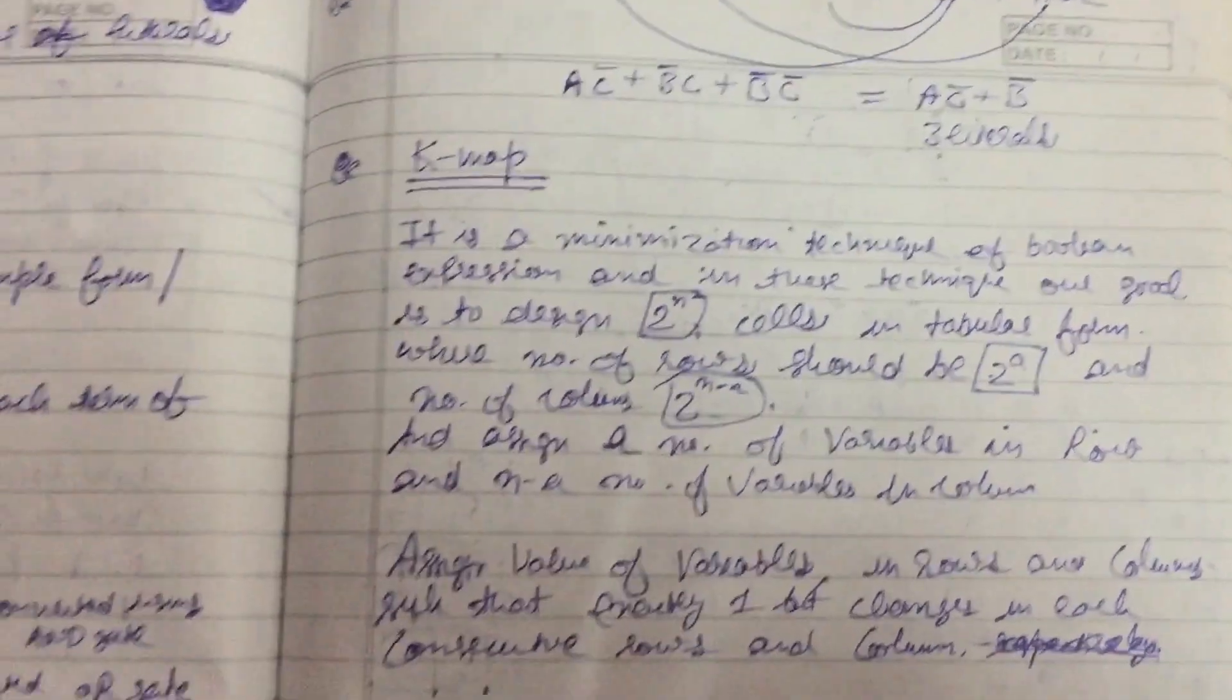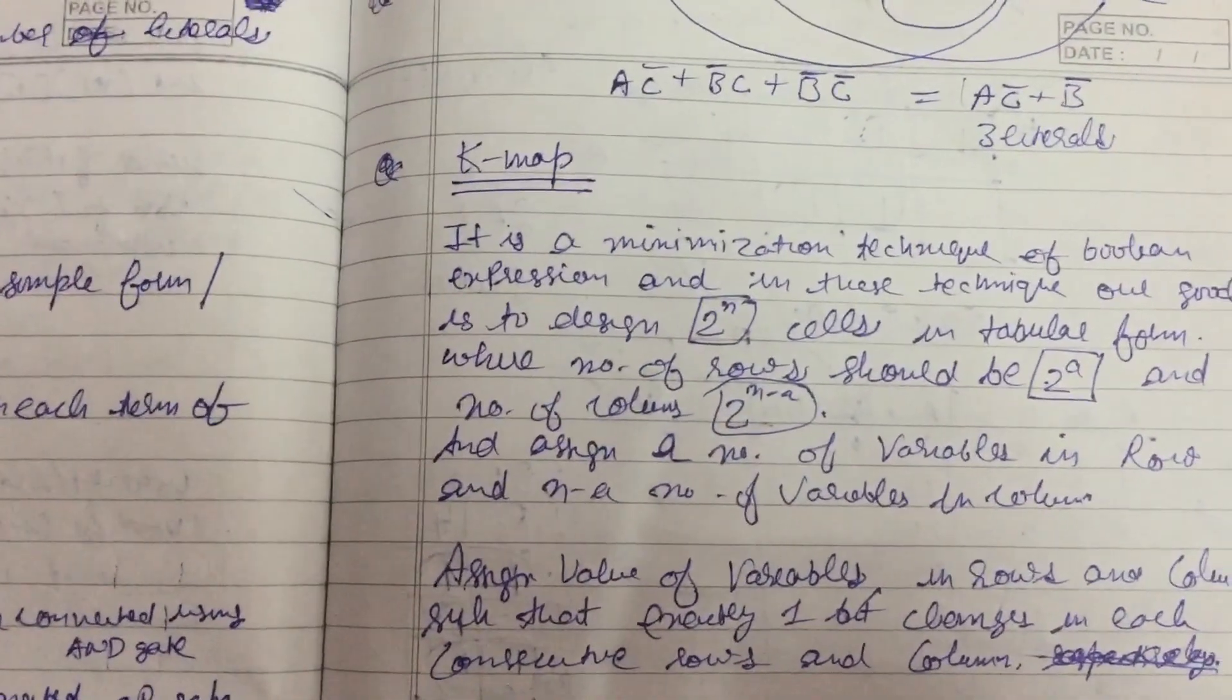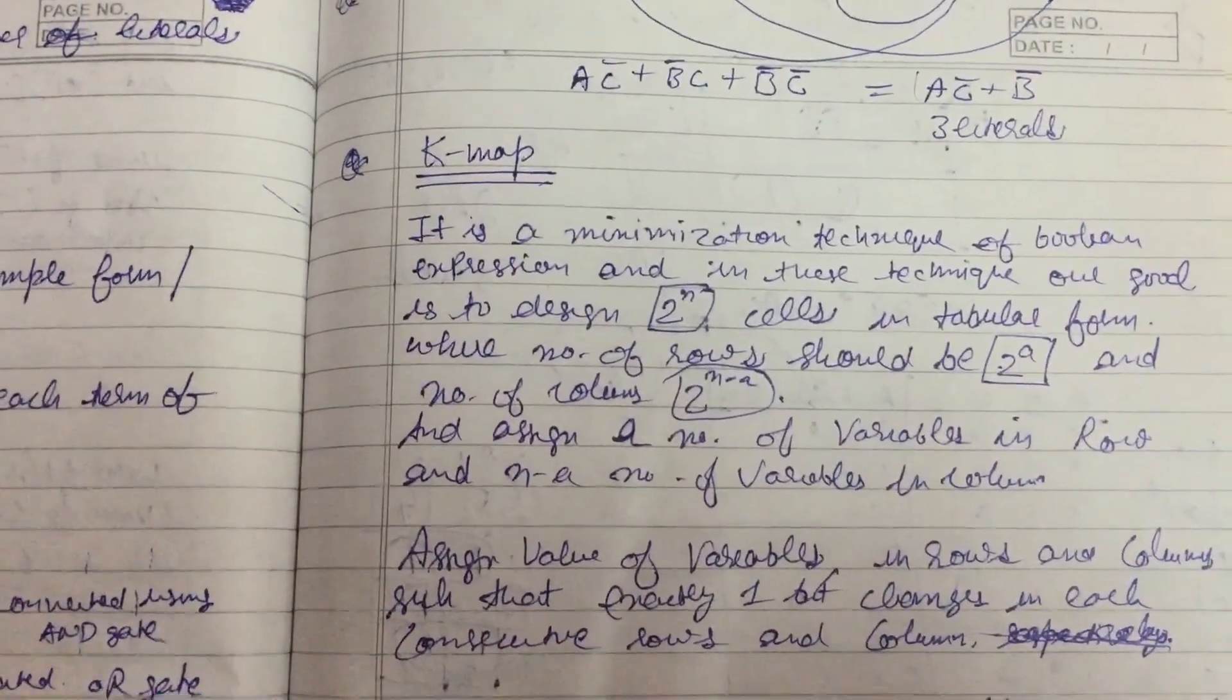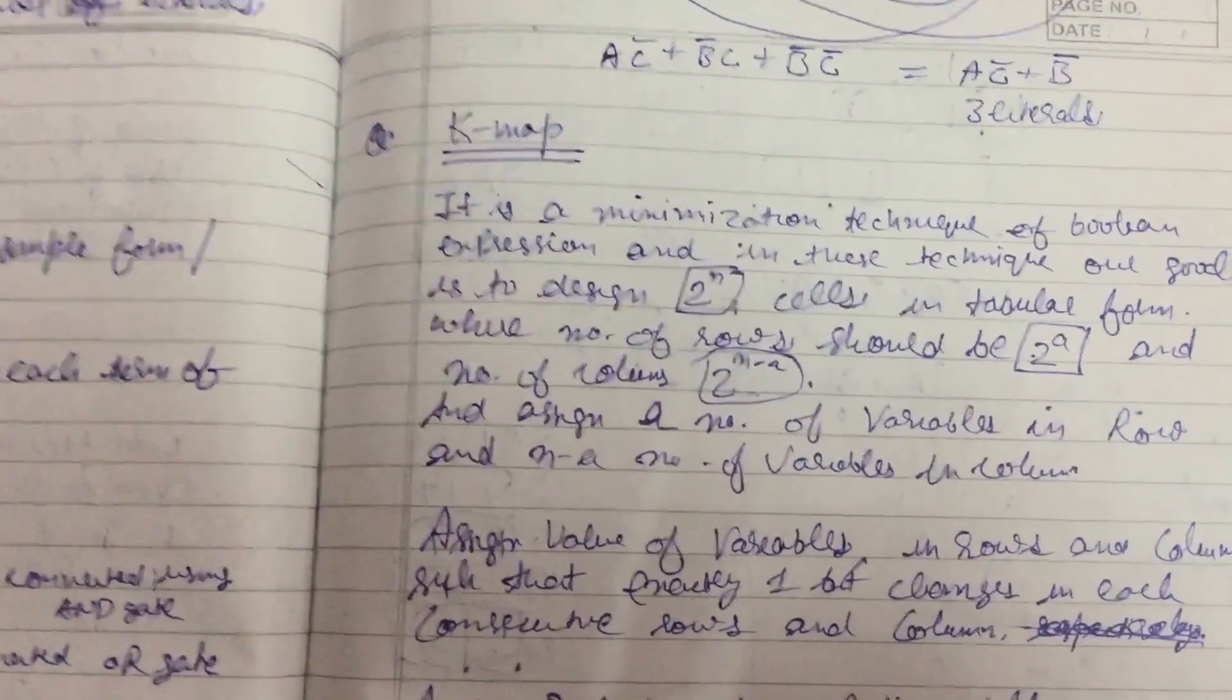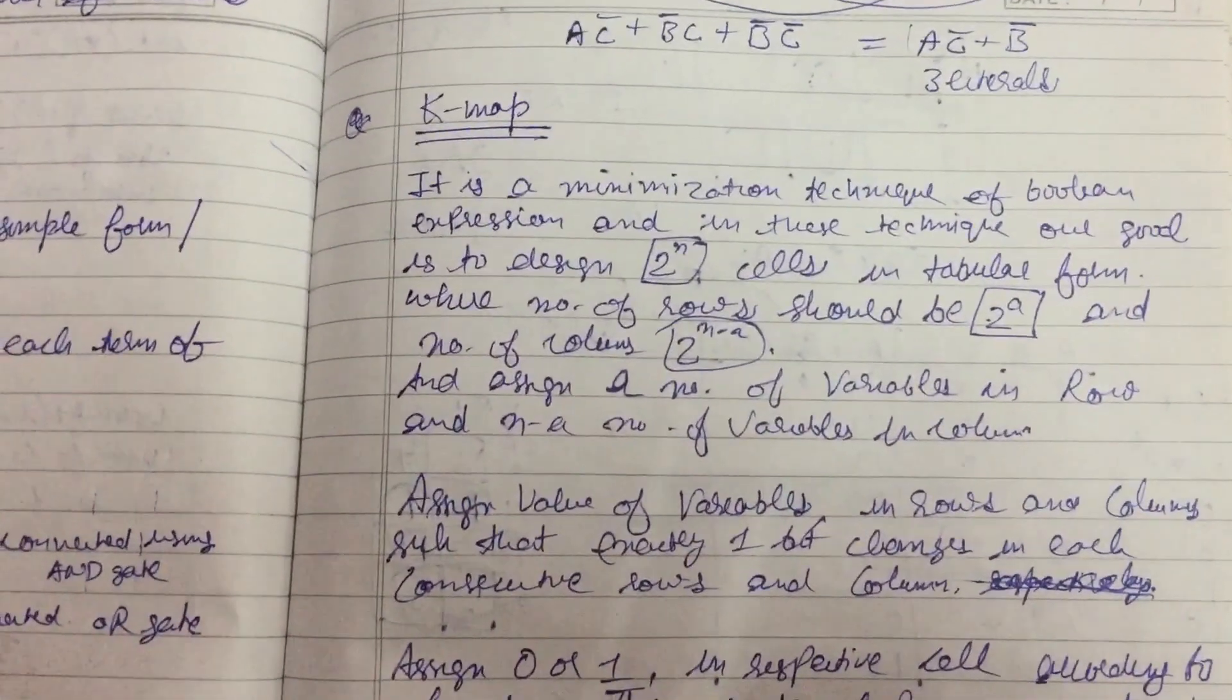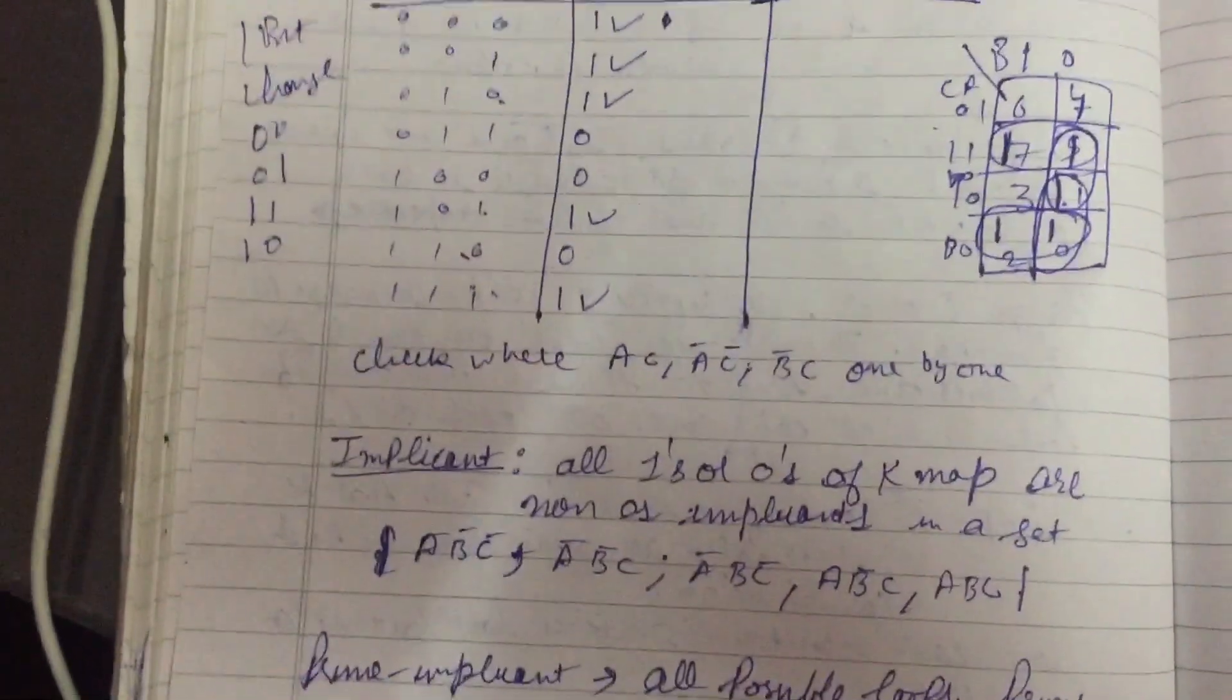So the question asked in any competitive exam: what are the maximum variables using K-map? Answer will be 6. We can use 6 variables in K-map maximum. So answer is 6. Move to the K-map example. Firstly, we have to know about what is K-map and what are the various terms used in K-map.